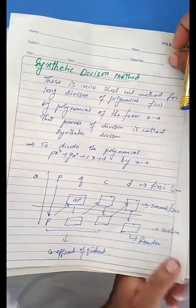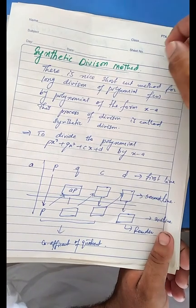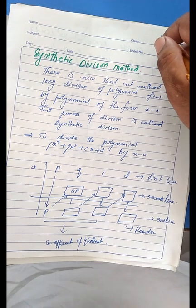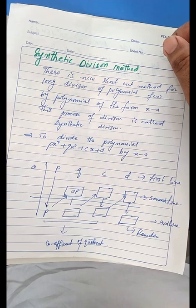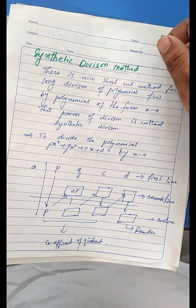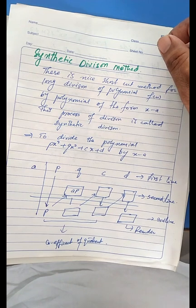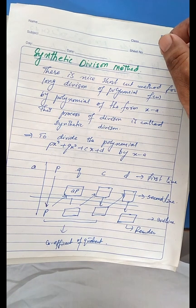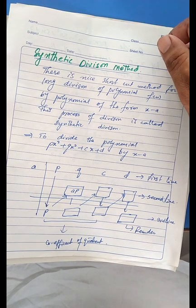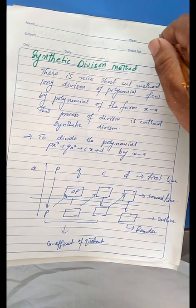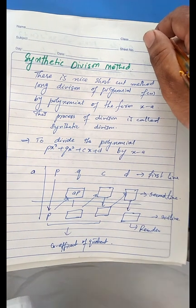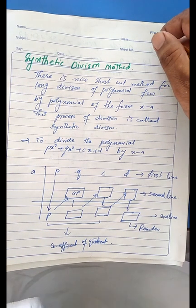The first topic in equations is the synthetic division method. This is a nice and shortcut method for the long division of a polynomial f(x) by a polynomial of the form x minus a — meaning the divisor is linear. This process of division is called the synthetic division method.